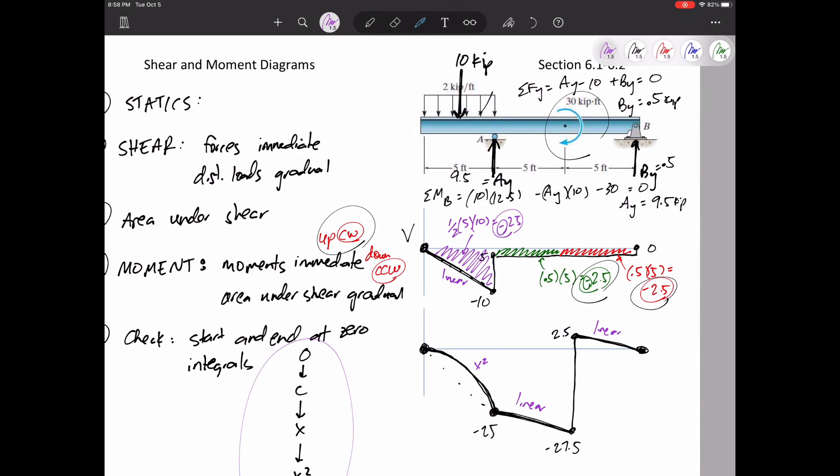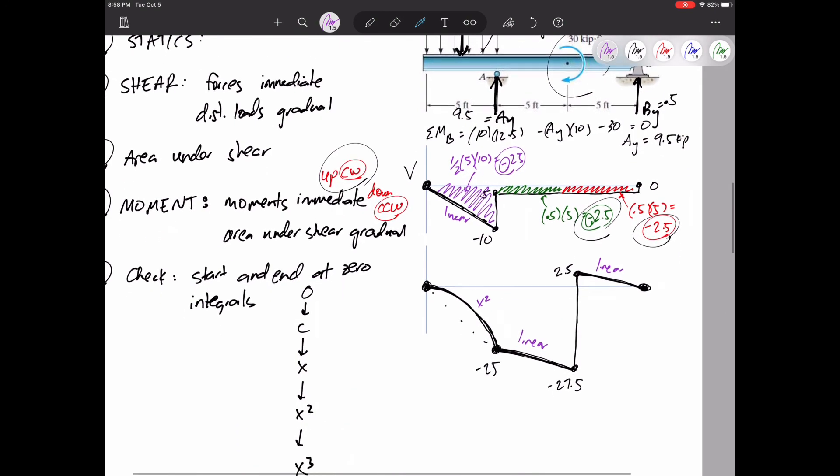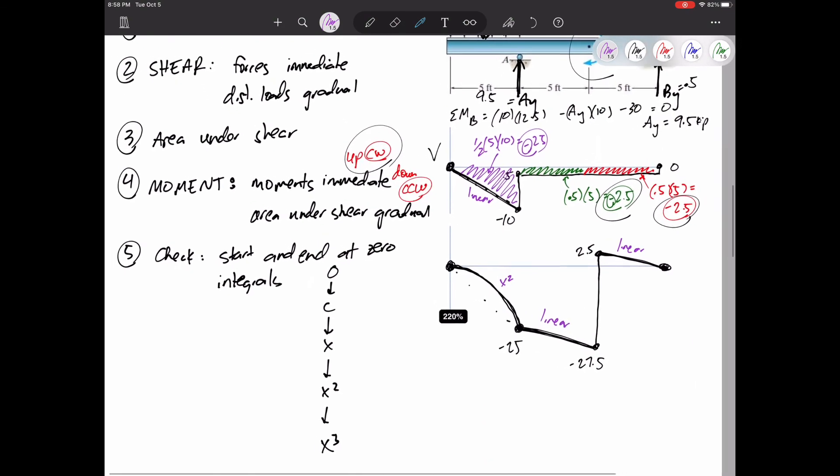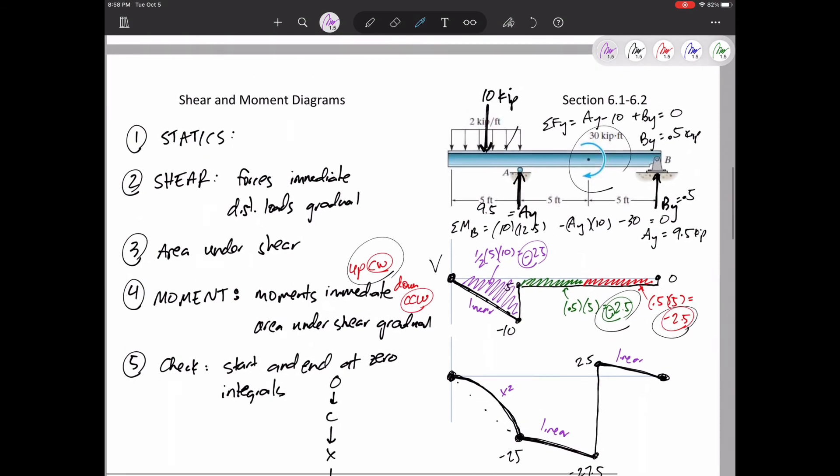If you're getting back to zero, you're probably doing good. Then just double check the curvature. V is the slope of M to make sure you've got the curvatures of these correct.